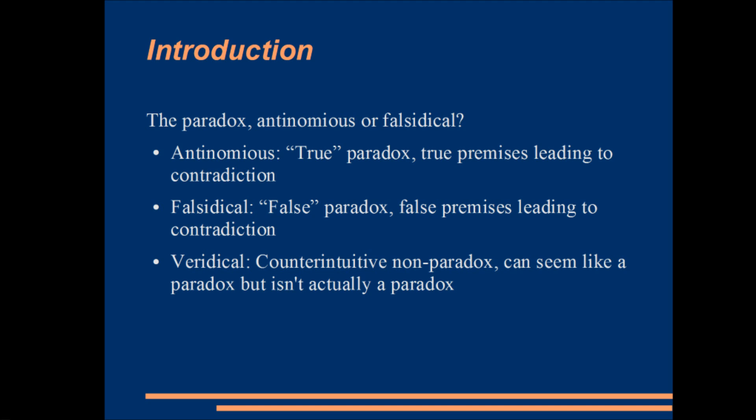Before starting, we should note that there are three different kinds of paradoxes. The Liar's Paradox is seen as an antinomious paradox by carnides.org, and he has challenged his viewers who want to defend logic to find a way to make the paradox a falselytical one. To do this, one needs to show that the reasoning that has led to the paradox is flawed from a logical standpoint.